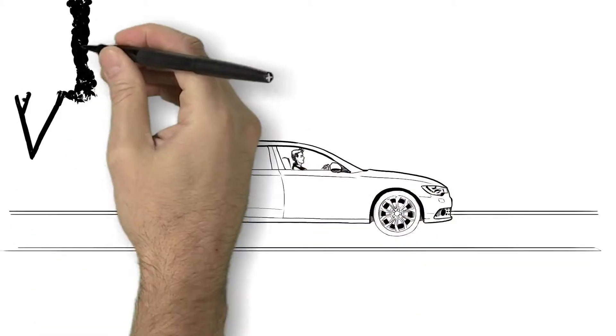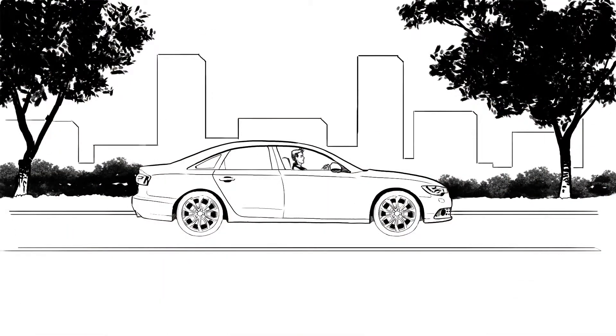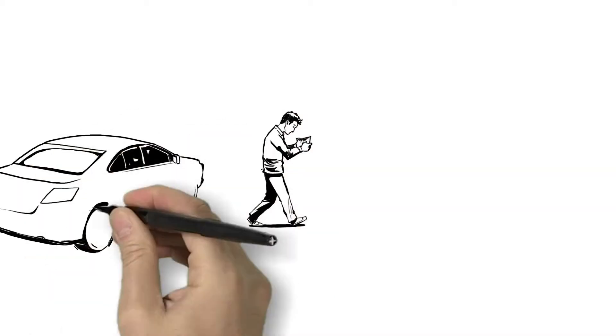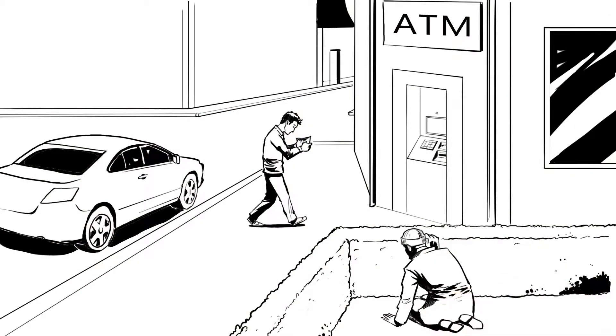It was late and Blake was going to meet his girlfriend at the club but needed a little extra cash. As he pulled up to the ATM, he was so distracted he didn't notice the man in black hiding behind the bushes.